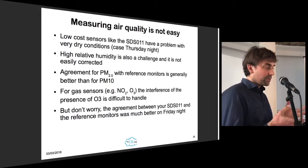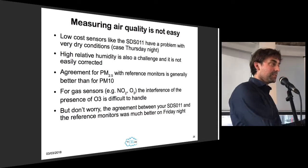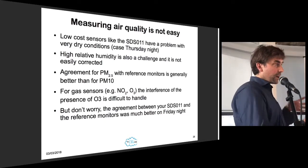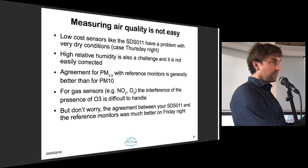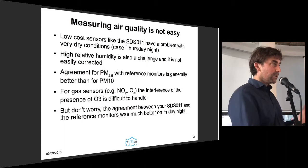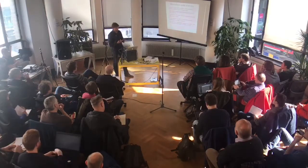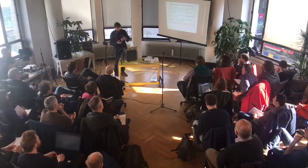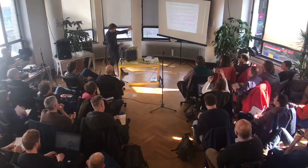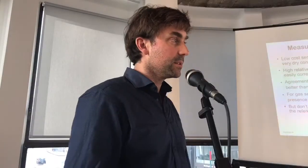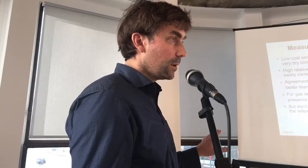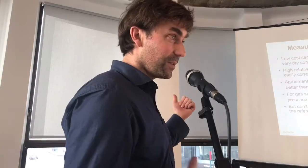As soon as you start moving around with your sensor, you enter into a totally different realm of complexity. If you have a stationary sensor that sometimes measures a little too high or too low, by aggregating data from every five seconds to every ten or thirty minutes, you already correct a lot of the measurement uncertainty. But when moving, you might think you're measuring an extremely high concentration in a street, when actually a truck had just passed and after that there was no more traffic.